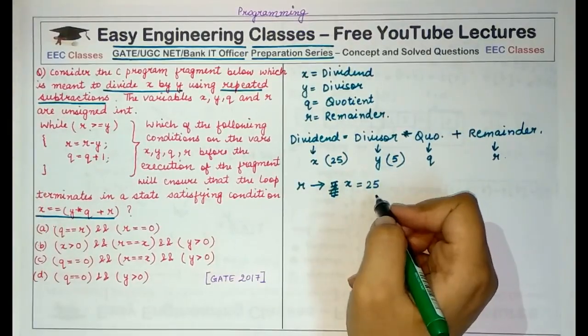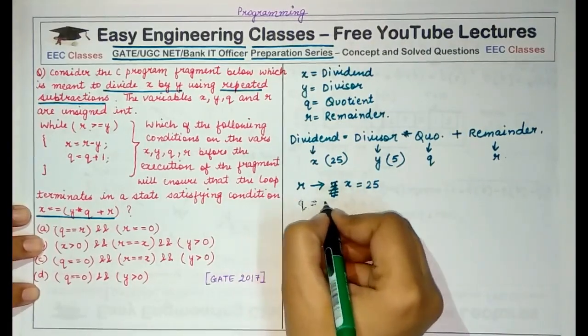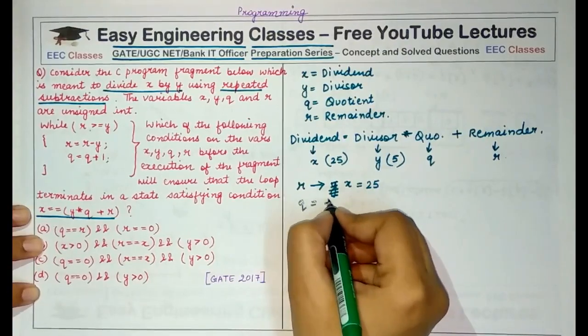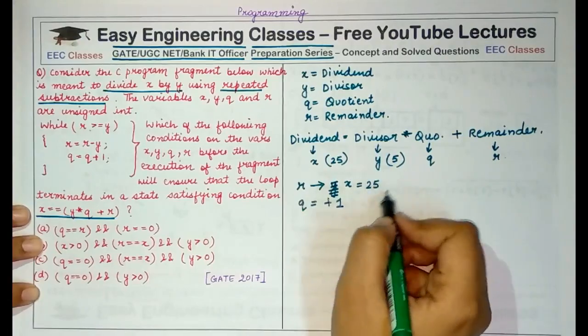If we assign R, the remainder, equal to 25 and we keep on subtracting 5 from this and every time we subtract 5 from 25, we increment the value of the quotient by 1.